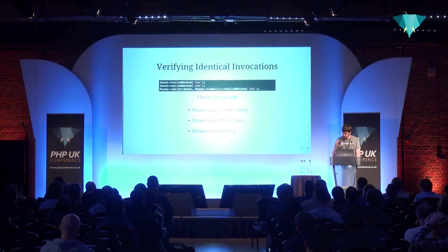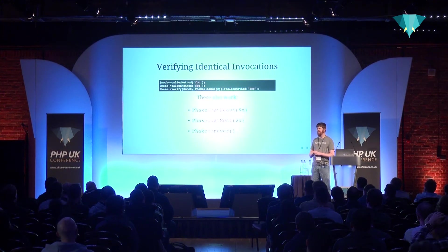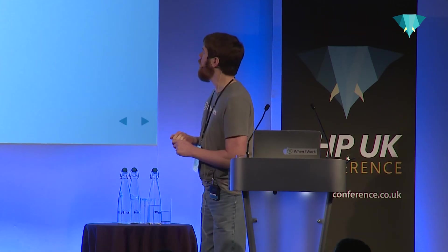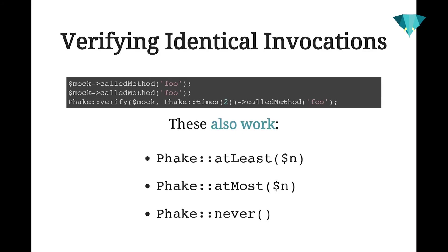If you have a method you expect to be called multiple times with the same parameters, when you specify the verification on the mock object, you pass a second parameter of Fake.times(2). This confirms the method was invoked twice with those parameters. There are other methods available off of Fake: you can verify it was invoked at least a certain number of times, at most a certain number, or never — which is essentially an alias for times zero.